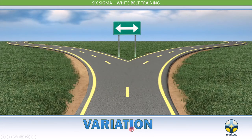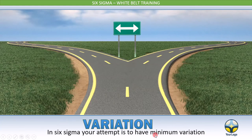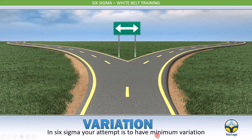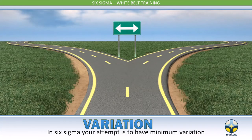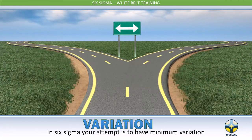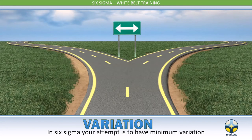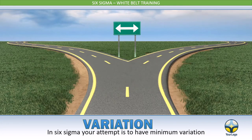The eighth philosophy of Six Sigma is variation. Anything will have variation, but in Six Sigma your attempt is to have minimum variation. The goal is to minimize variation in the process so that you deliver a consistent product or consistent services to your customer. With this, all the philosophies are covered.